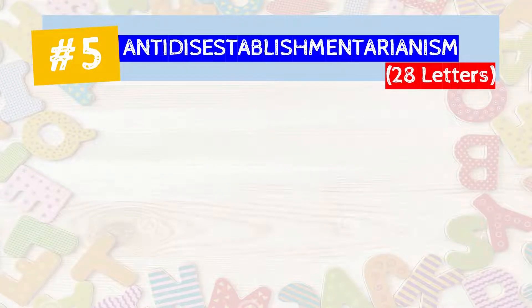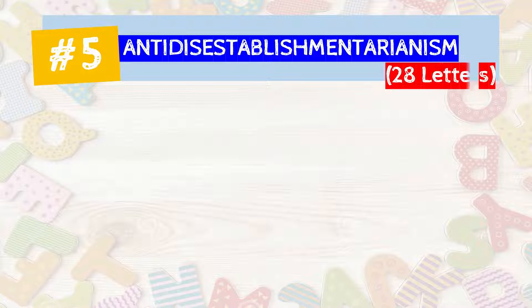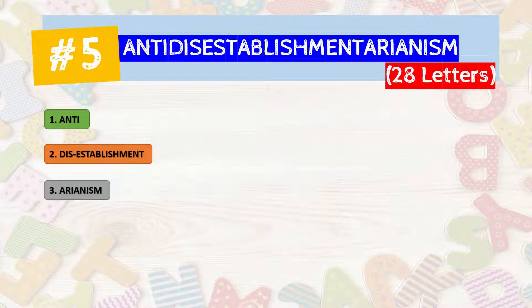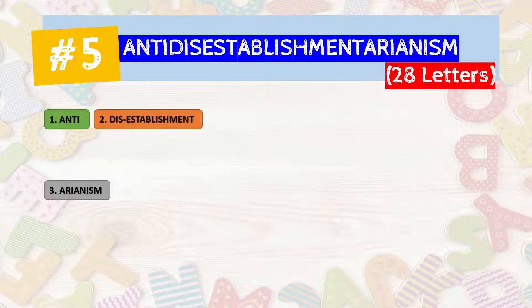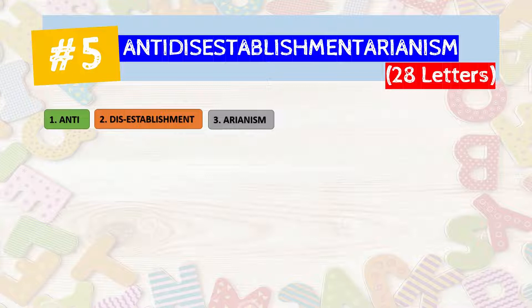Number five is the smallest word in our list and it contains 28 letters. The word is 'antidisestablishmentarianism.' It's easy to pronounce if we break it in three parts: anti — disestablishment — arianism. Once again: anti — disestablishment — arianism.